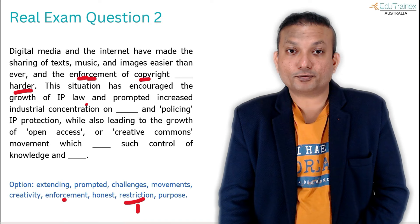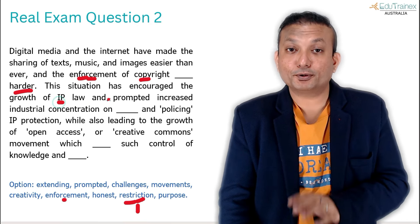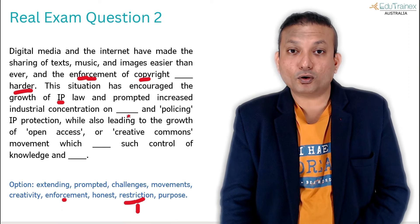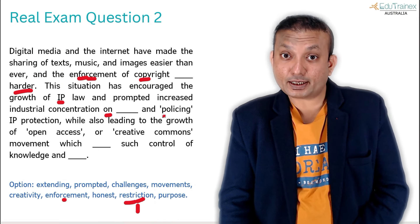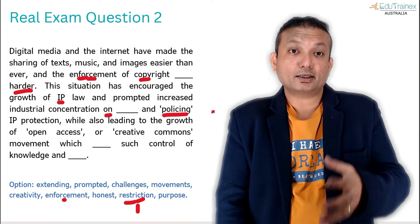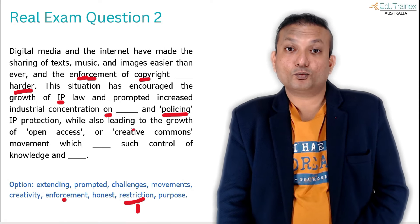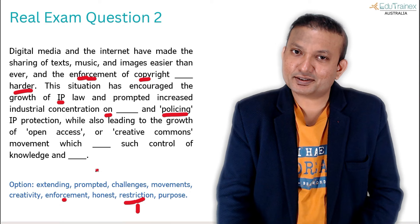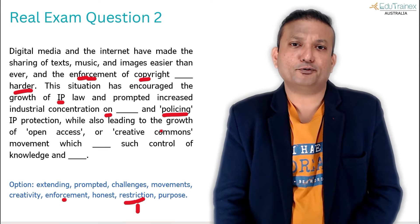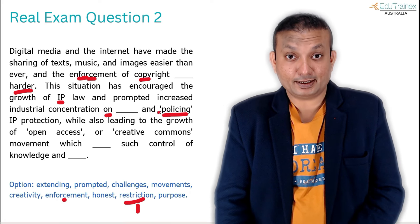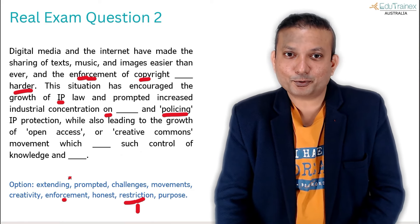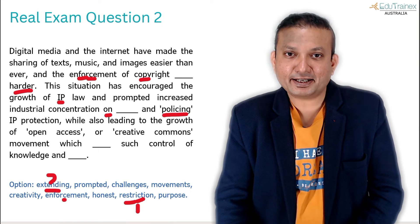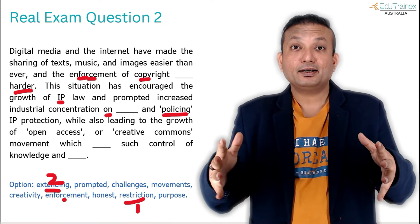Next: 'The situation has encouraged the growth of IP law and prompted increased industrial concentration on dash and policing.' 'Policing' is used as a noun in -ing form. We need something in a similar form for the parallel structure. 'Extending' is very similar. When 'and' or 'or' is used, you typically use the same kind of word — that's also a grammar pattern. So 'extending' works: 'increased industrial concentration on extending and policing.'